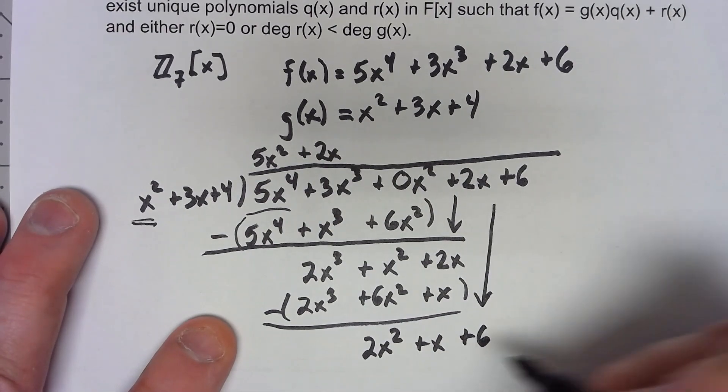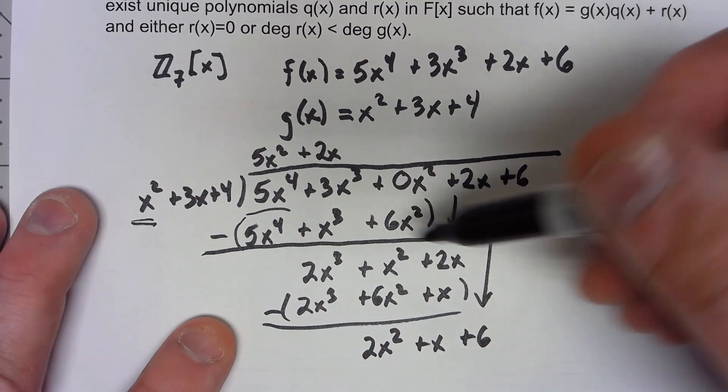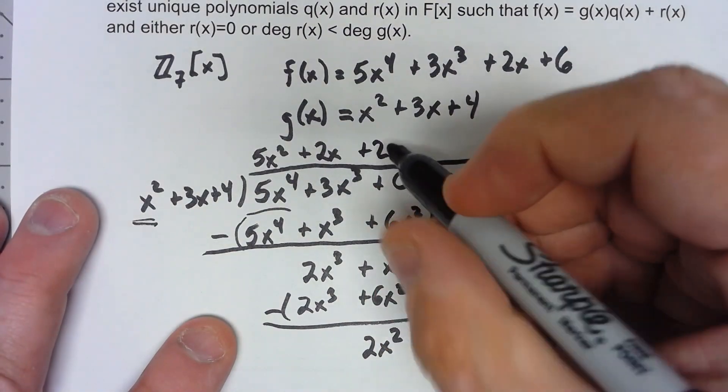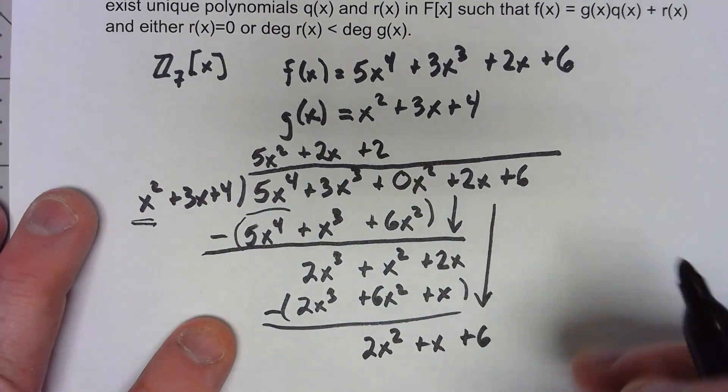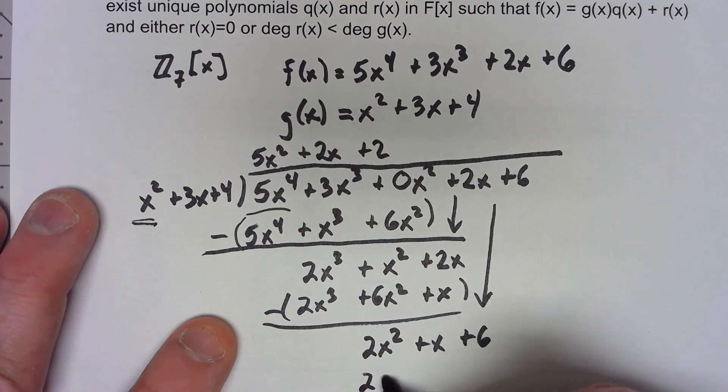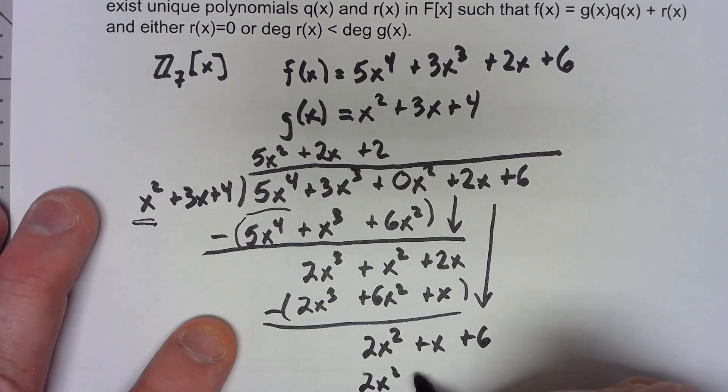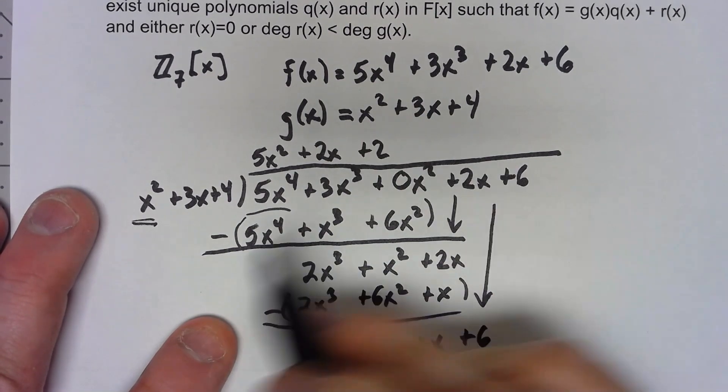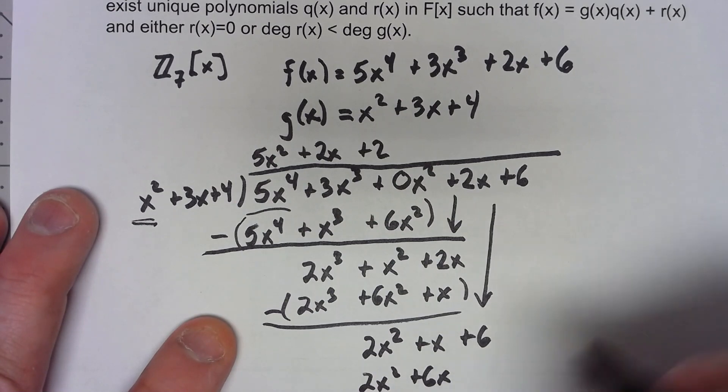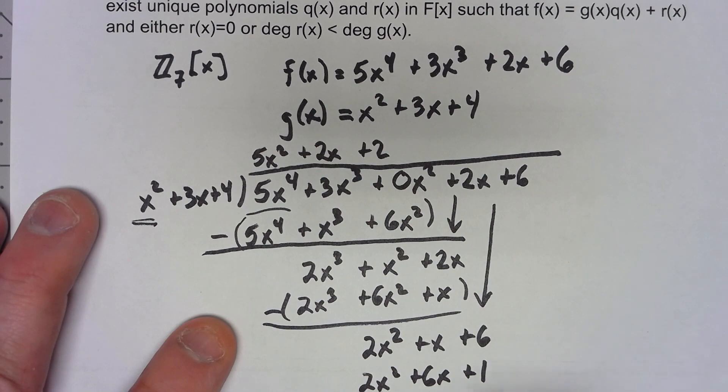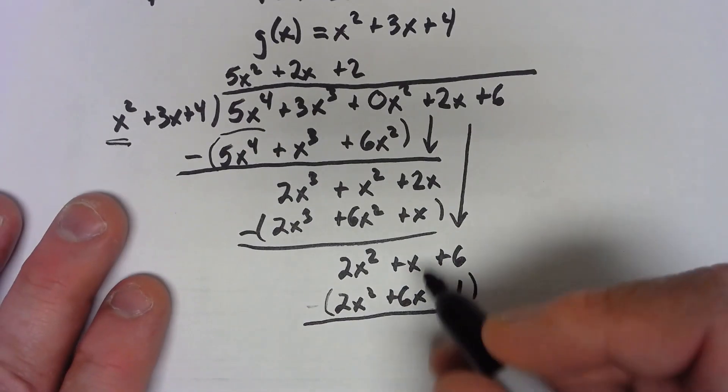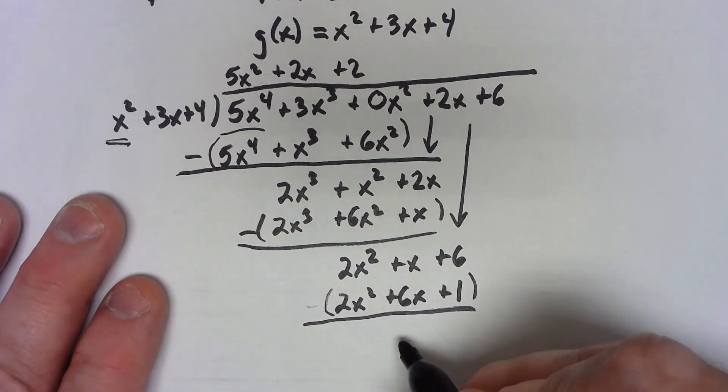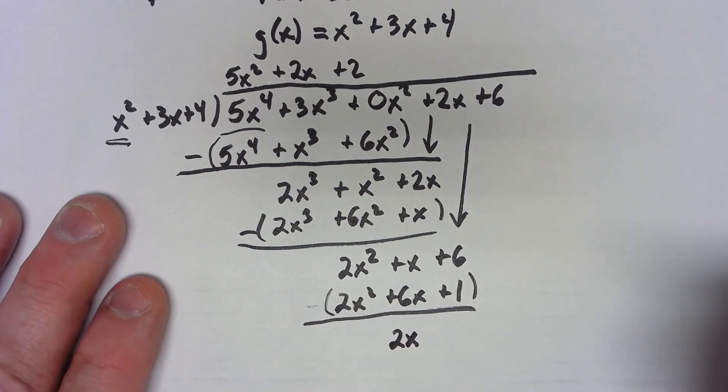And then we need a plus 2 up top, because 2 times x squared gives us 2x squared. 2 times 3x gives us 6x, and 2 times 4 is 8, which is 1 when we do it in mod 7. One last subtraction. x minus 6x gives us 2x, and 6 minus 1 gives us 5.